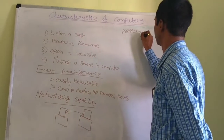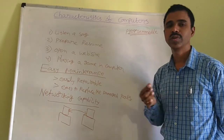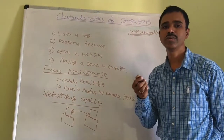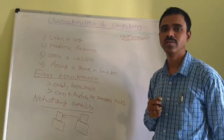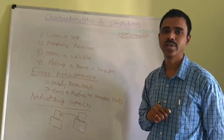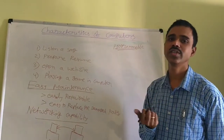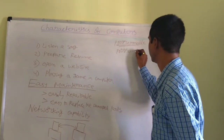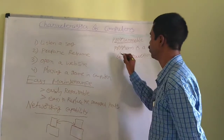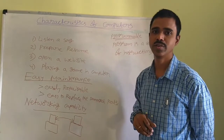The ninth property is programmable. In the computer, for any operation you need software. For example, to play a game, to use a calculator, or to watch a movie you need VLC player or Windows Media Player. Software is a set of programs, and a program is a set of instructions. For example, in C language we write programs — that is called a programming language.